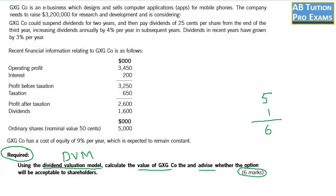Let's read the question. GXG Co is an e-business which designs and sells computer applications for mobile phones. The company needs to raise 3,200,000 for research and development. GXG Co could suspend dividends for two years and then pay dividends of 25% per share at the end of the third year. So this is dividend in three years. Increasing dividends annually by 4%. This is our g if the option is taken. Dividend in recent years have grown by 3%. It is also g but it is g if the option is not taken.